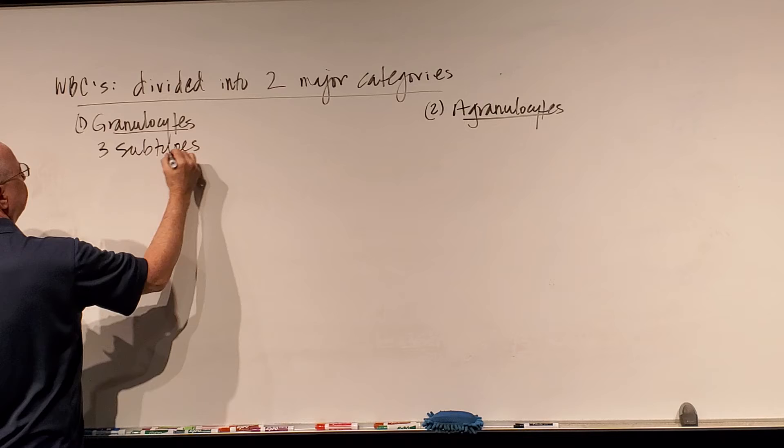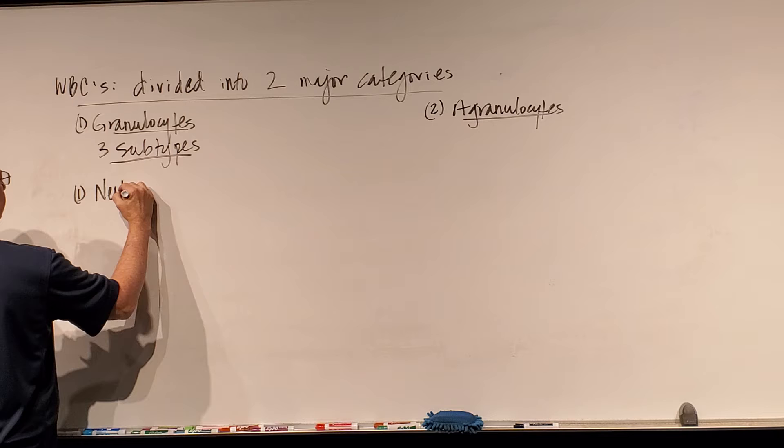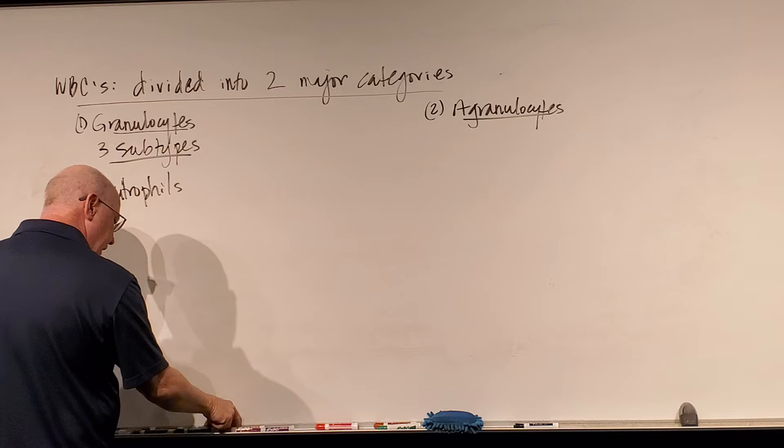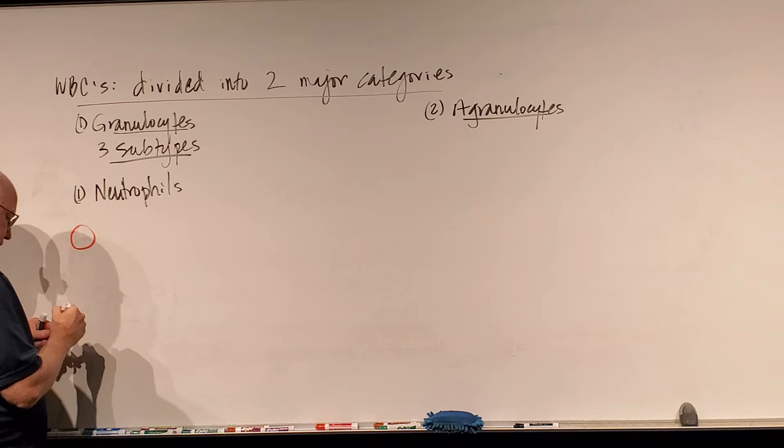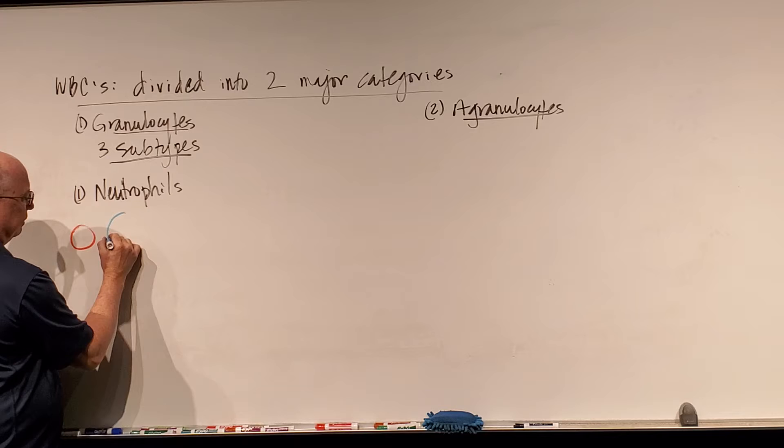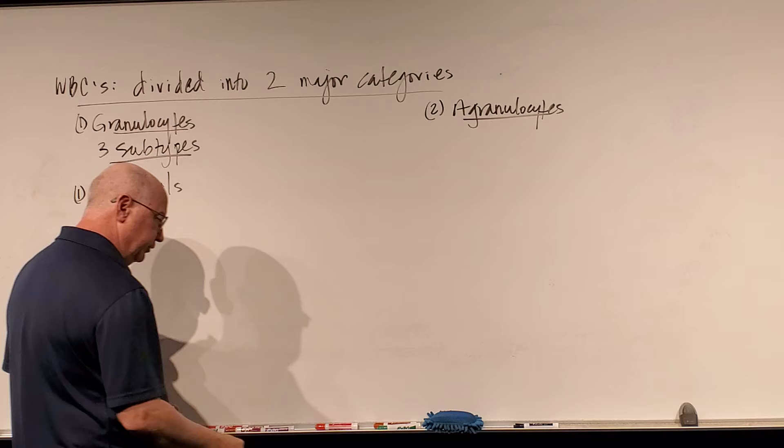For the granulocytes, there are three subtypes we need to know about. One is called neutrophils. If we were to look at neutrophils under a microscope, they stand with a light blue background and are a little bit bigger than red blood cells. One of the things we know about neutrophils is that they can have a multi-lobed nucleus — their nucleus can take on different shapes, with one large lobe, then another lobe, and sometimes they can be branched.